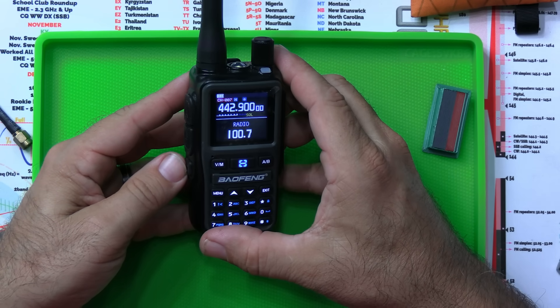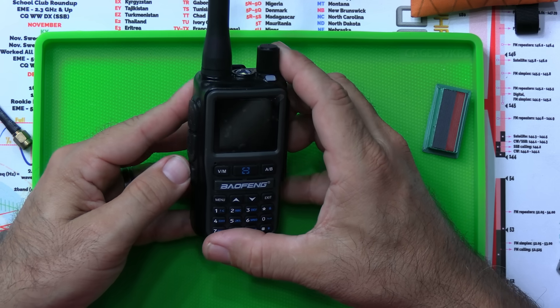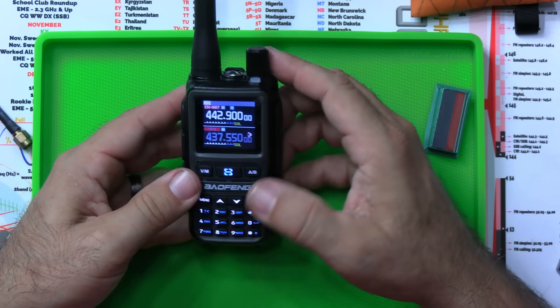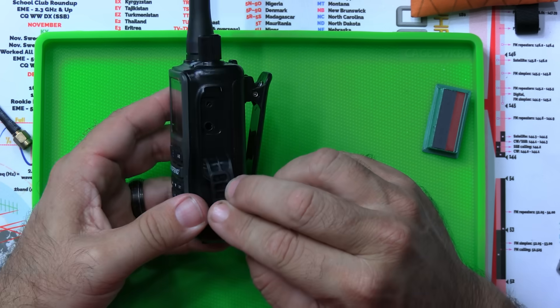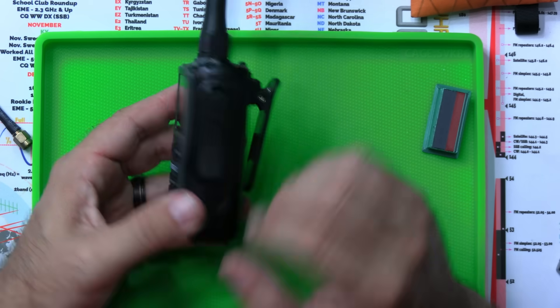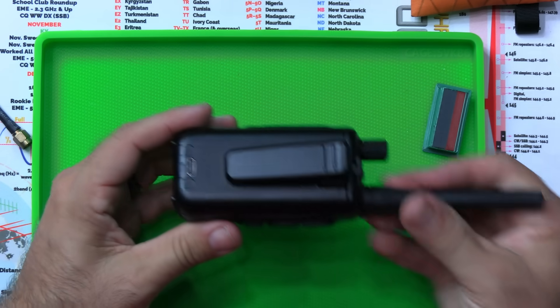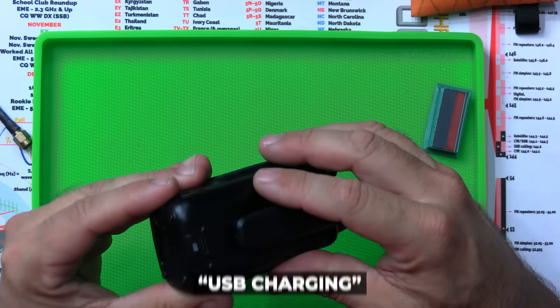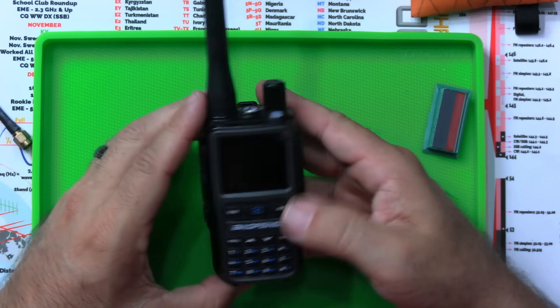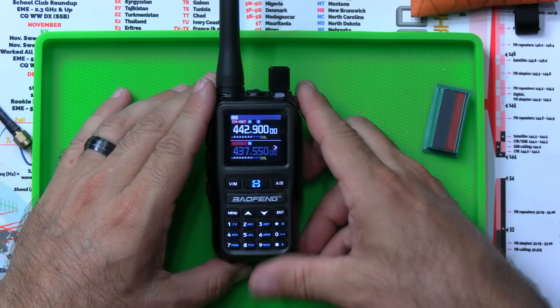So there's FM broadcast radio. Standard Kenwood K connector on the side over there. And the best part about it, I think USB C programming on the battery. So all of that is part of the UV five R mini.